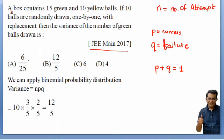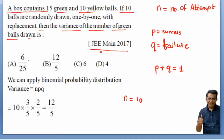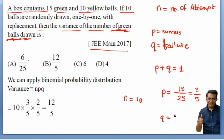The question: a box contains 15 green and 10 yellow balls. If 10 balls are drawn at random, one by one with replacement, find the variance of the number of green balls. Success is defined as drawing a green ball. There are total 25 balls, so probability of getting a green ball is 15 out of 25, that means 3/5. If P is 3/5, then Q is 2/5.